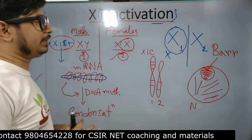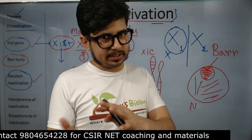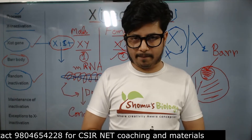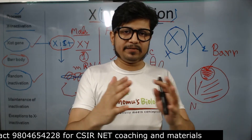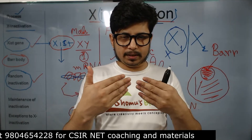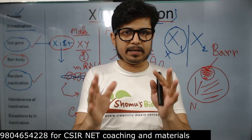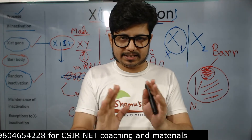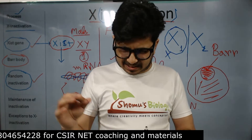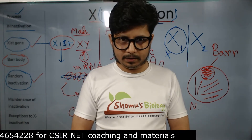So the Barr body is the highly condensed, inactivated form of the X chromosome, visible as a dot-like dense structure inside the nucleus. To summarize: X-inactivation is crucial for dosage compensation, it is done by XIST, and which X gets inactivated is determined by the XIC — the X-inactivation center — along with some involvement of other proteins and genes.